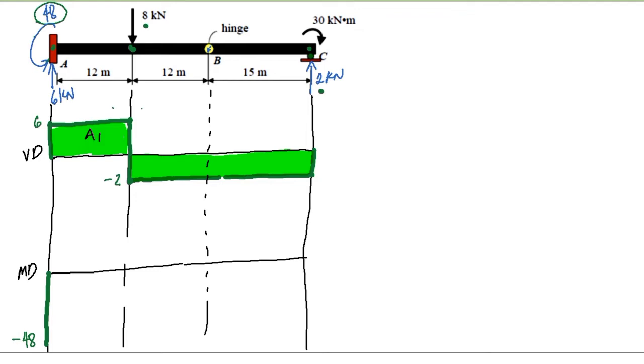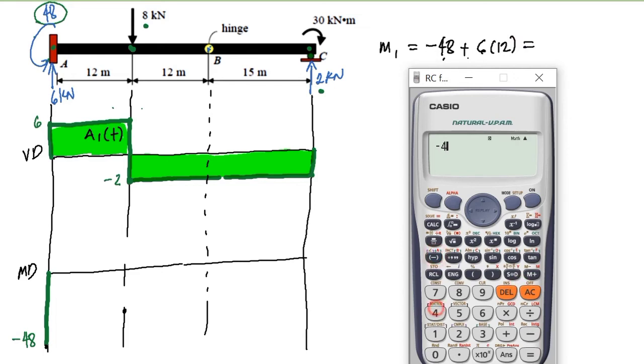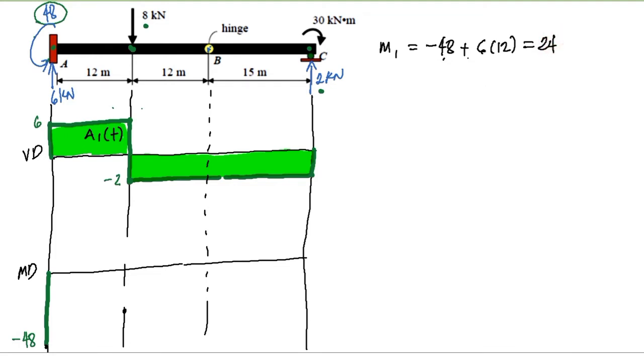We need to compute area 1 to complete the moment at this point. Let's call it M1. M1 equals negative 48 plus area 1. Area 1 is positive moment, or positive area, while this is negative moment. Area 1 equals 6 times 12. So we have negative 48 plus 72, which equals 24. The M1 equals 24 and it's positive.